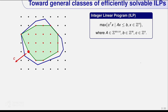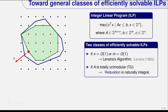There are several classes of IPs we know how to solve efficiently. In particular, if the number of variables or constraints is constant, or another very important class: if the matrix A is totally unimodular. Totally unimodular means that any square minor of the matrix is either minus 1, 0, or 1 — where minor means the determinant of a square submatrix. The reason this works is that if A is totally unimodular, the LP relaxation coincides with the integer hull, so you can just solve the LP and return a vertex solution.